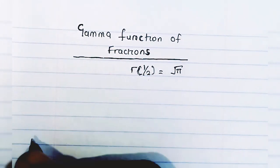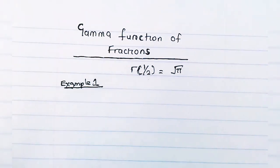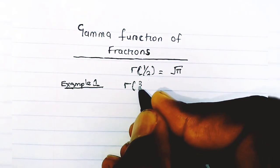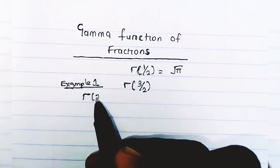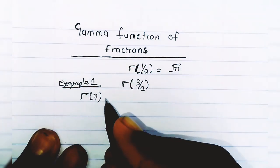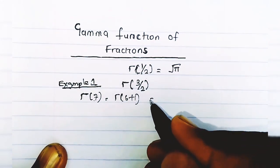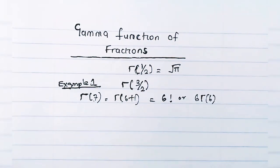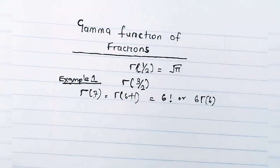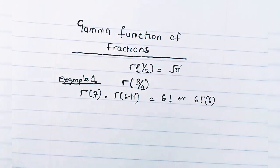Example 1: Find the gamma function of 3/2. Now, as a reminder from the last video, for standard integer values like Γ(7), you express 7 as a value adding 1 — so 7 = 6 + 1 — and the answer is 6! or Γ(6). That's straightforward for integers.